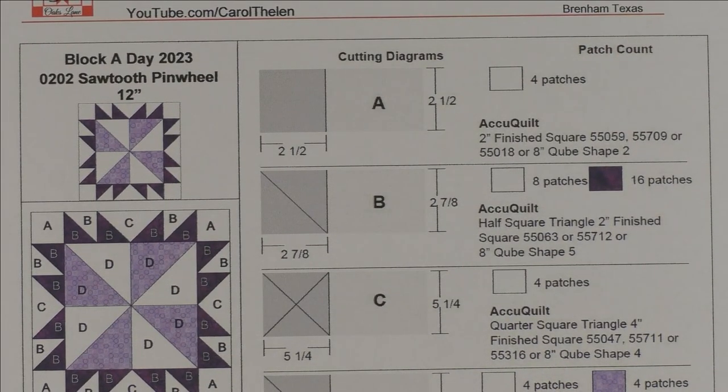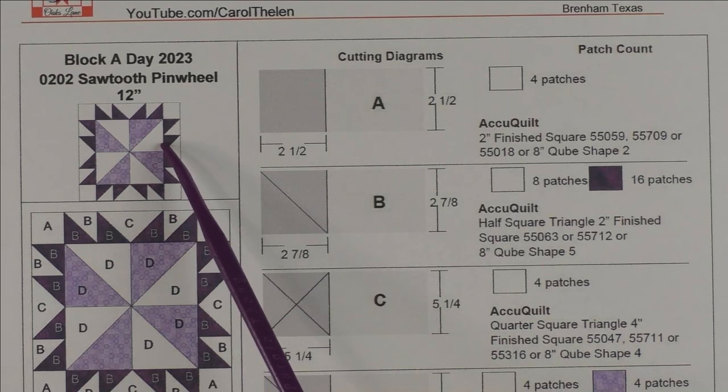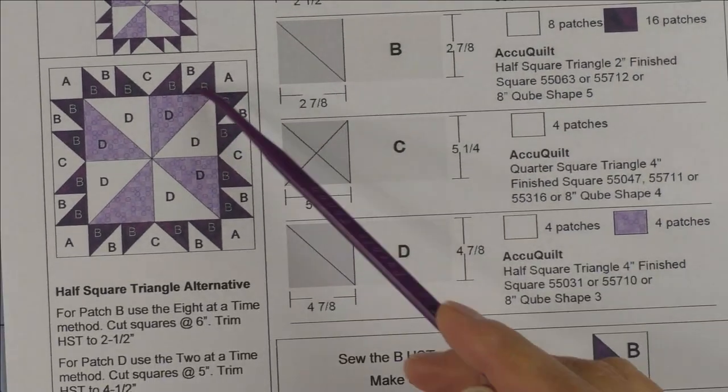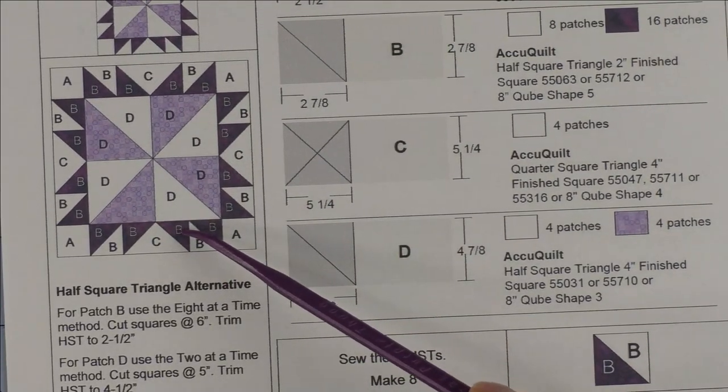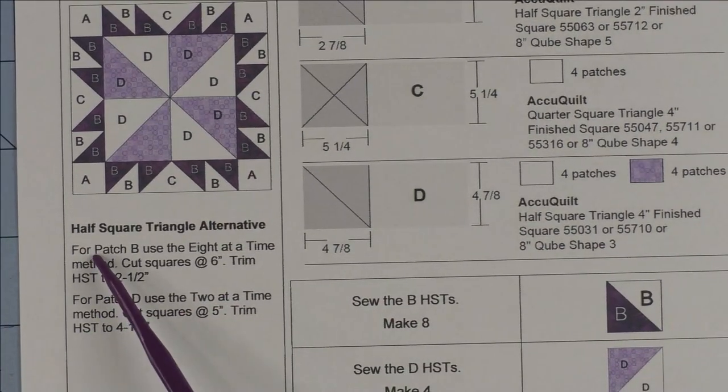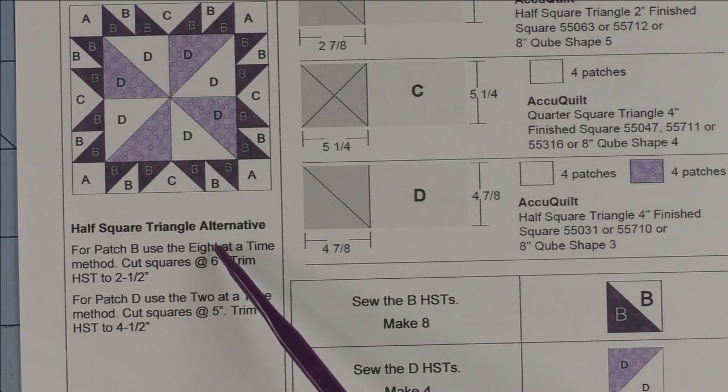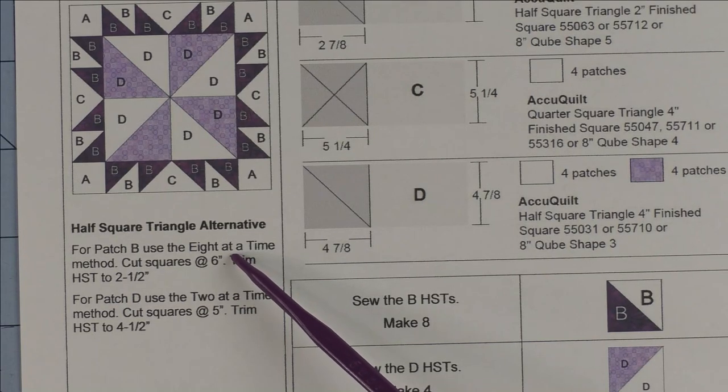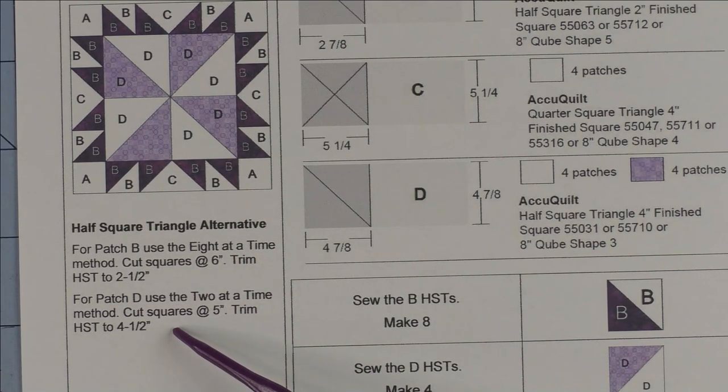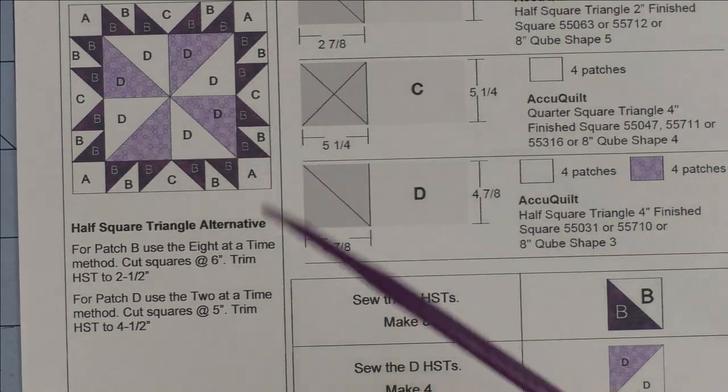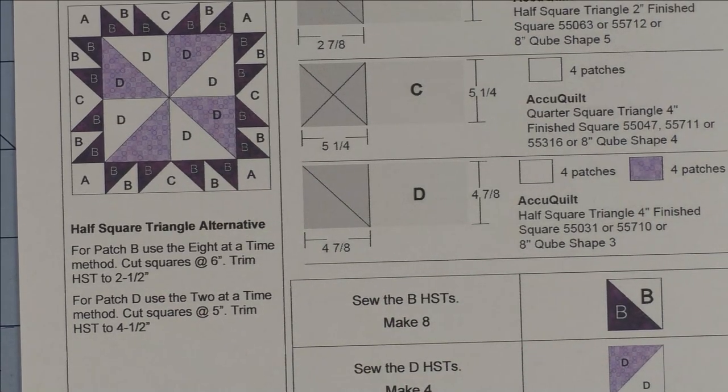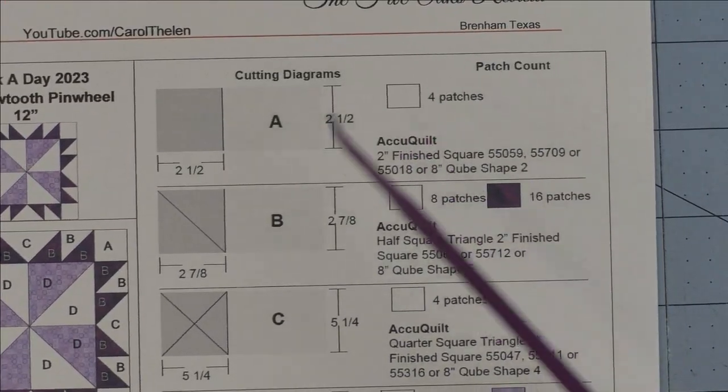Here is the Sawtooth Pinwheel, it's another 12-inch block, and here is the piecing diagram. This is your chance to use the half square triangle eight at a time method if you like, and also the two at a time method to make the bigger half square triangles. Here are the cutting instructions.